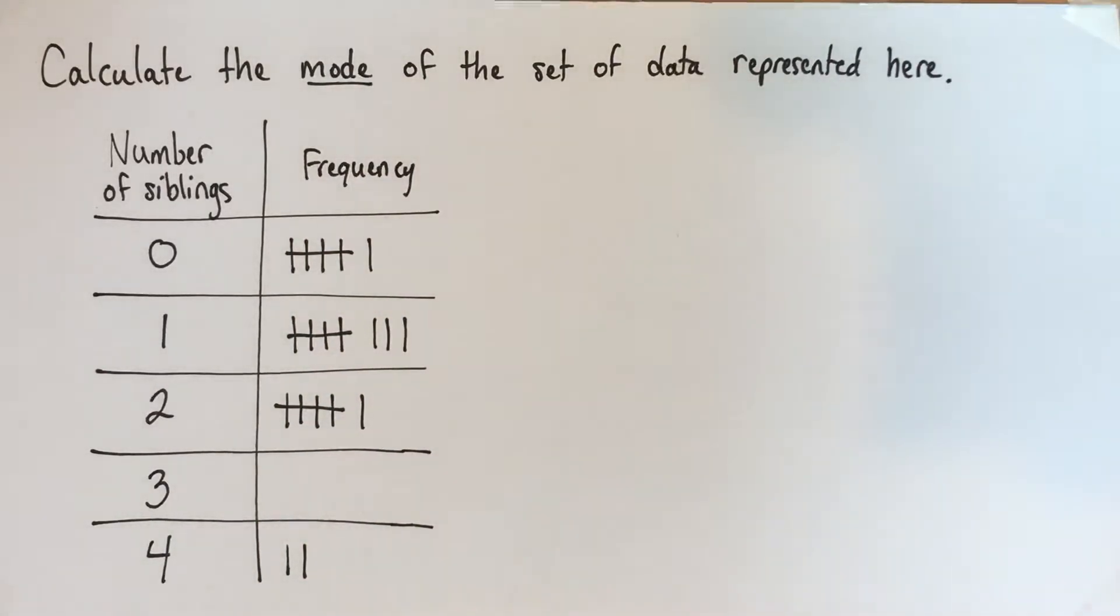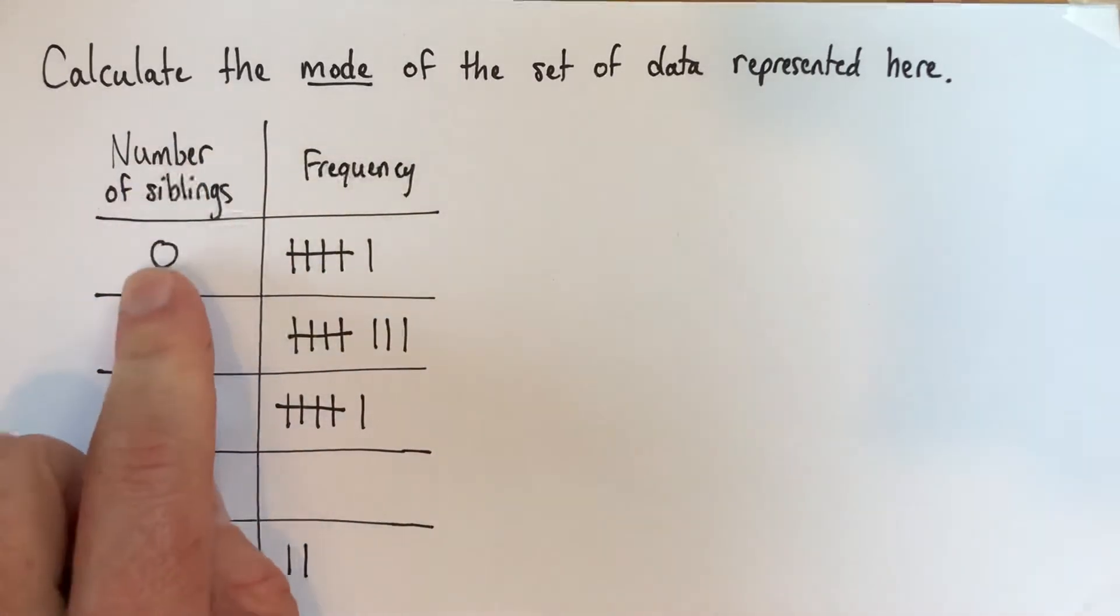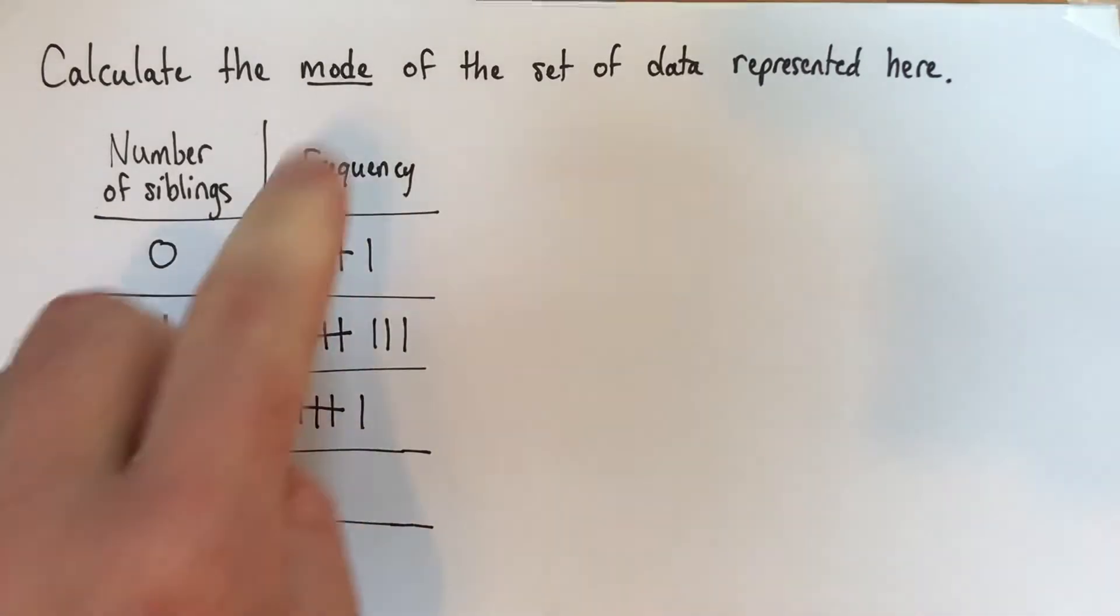First of all, a reminder that the mode of a set is the value that occurs the most frequently, or the most common number. Now let's look at what this table is: the number of siblings from 0 to 4 and the frequency.